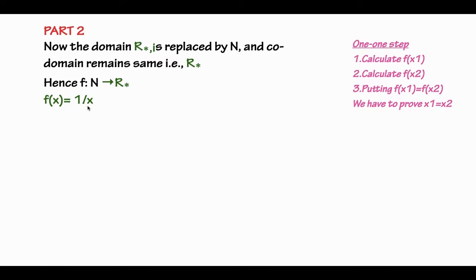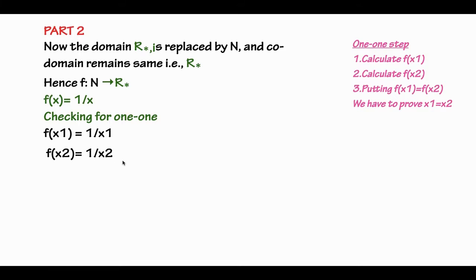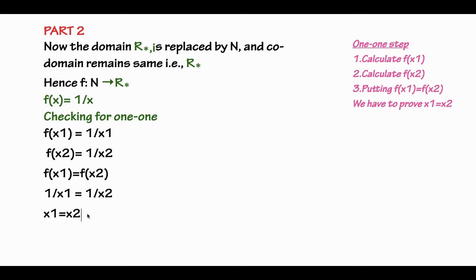For this function f: N → R* with f(x) = 1/x, we check if it is one-one. Let f(x1) = 1/x1 and f(x2) = 1/x2. If f(x1) = f(x2), then 1/x1 = 1/x2, so x1 = x2. Therefore, f is one-one.